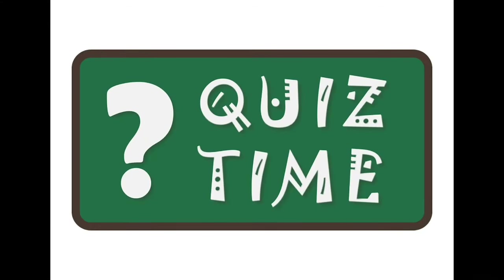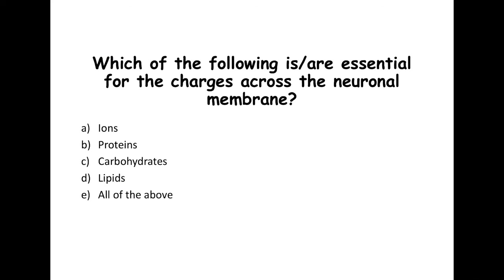Now it's quiz time. Which of the following are essential for the charges across the neuronal membrane — ions, proteins, carbohydrates, lipids, or all of the above? If you selected ions, you are correct — ions are responsible for the positive and negative charges.